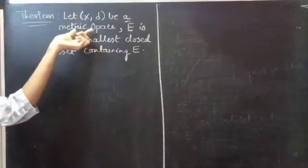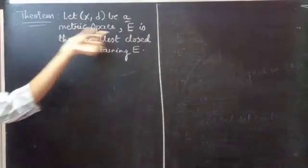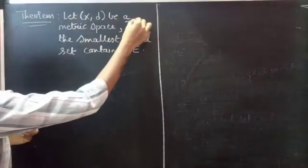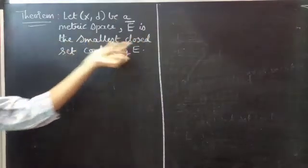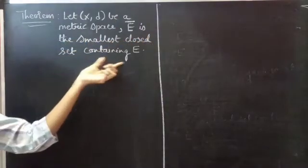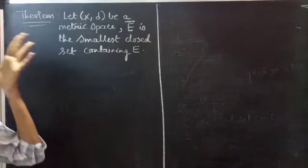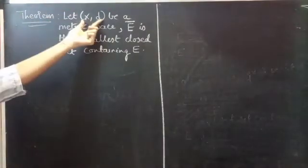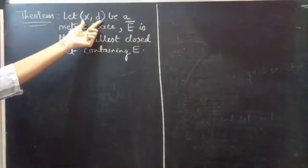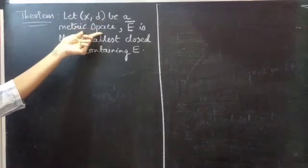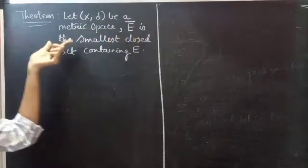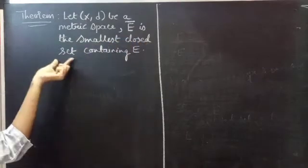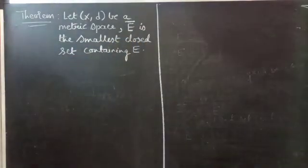Let (X,t) be a metric space. E-bar, that is the closure of E, is the smallest closed set containing E. If we are given that the ordered pair (X,t) is a metric space, then we have to prove that E-bar is the smallest closed set containing E.